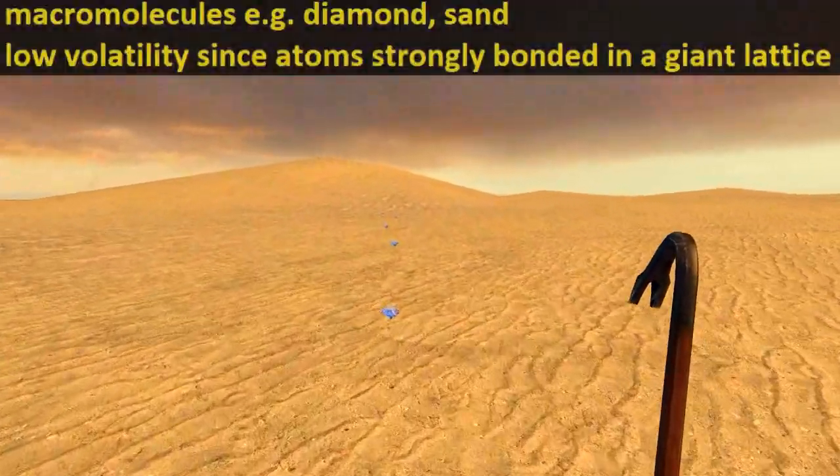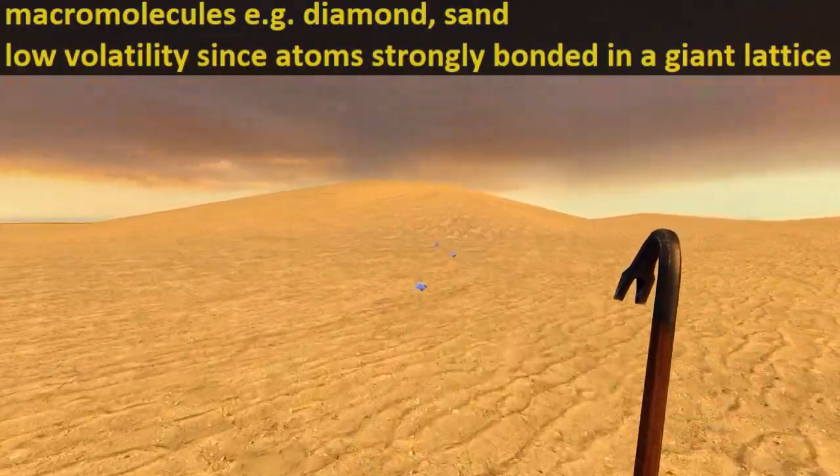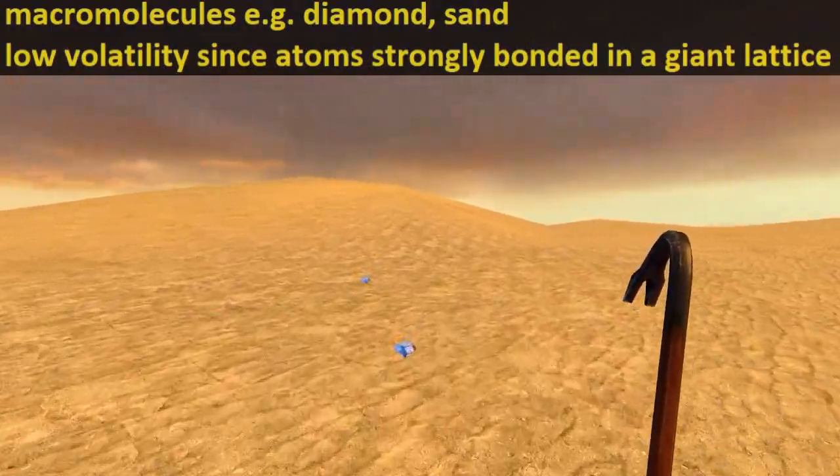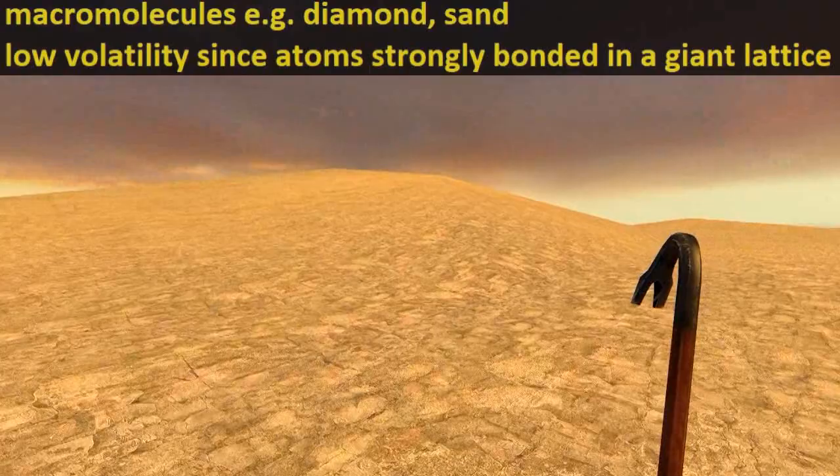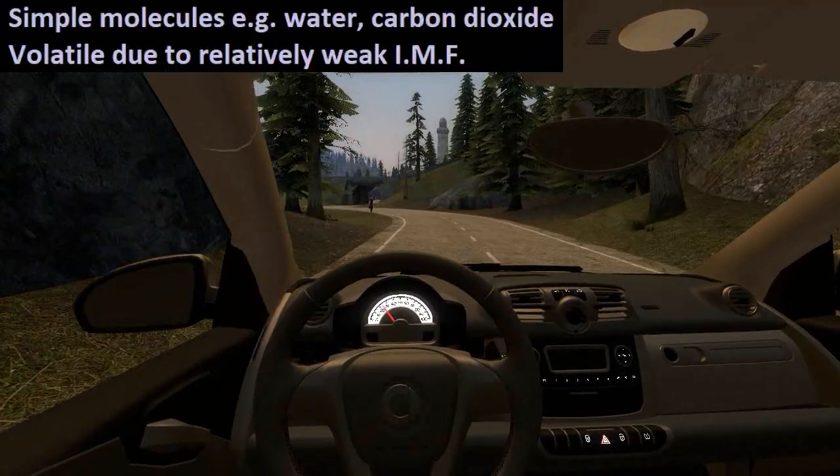There are two sorts of covalently bonded compounds. First of all, the macromolecules like diamond or sand, and these have a low volatility since their atoms are strongly bonded in a giant lattice.